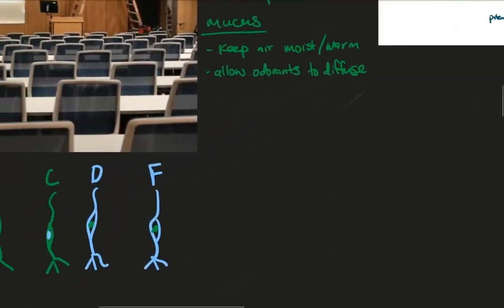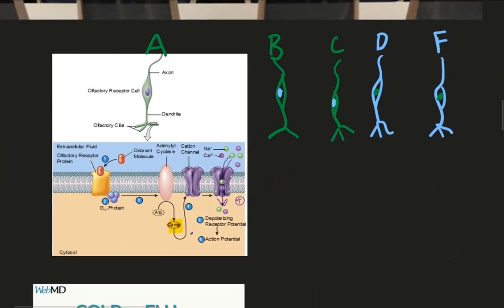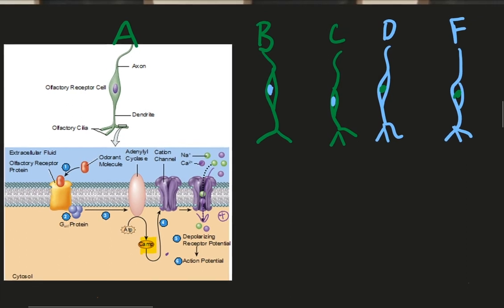Now let's zoom in even more to see the cell physiology. Odorants bind to a G-protein coupled receptor on the olfactory receptor's dendritic region. These dendrites are also referred to as olfactory cilia, though they're not really cilia at all.